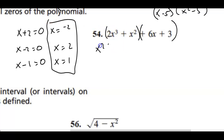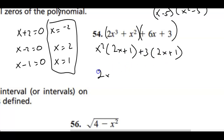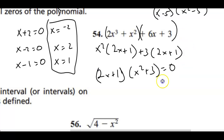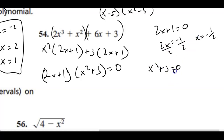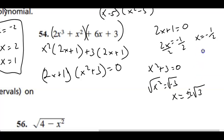For the next polynomial, factor out x squared giving 2x plus 1, then factor out 3 also giving 2x plus 1. Factoring out 2x plus 1, I'm left with x squared plus 3. Setting factors to zero: 2x plus 1 equals 0 gives x equals negative one-half. For x squared plus 3 equals 0, subtract 3 and take the square root of both sides — we get x equals plus or minus i times the square root of 3. So there are three zeros total, matching the degree of 3.